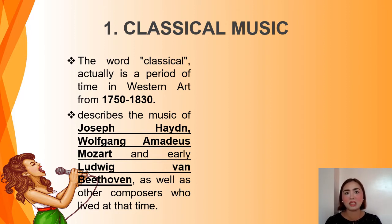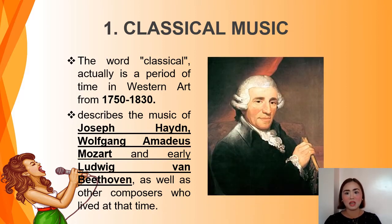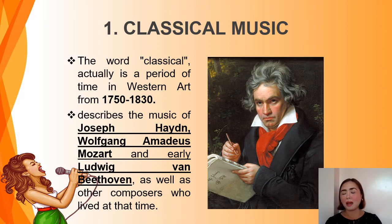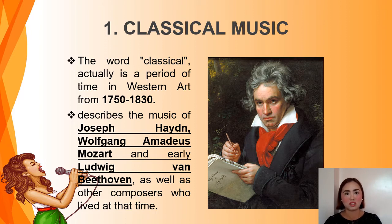All works of art created from 1750 to 1830 belong to the classical period of Western art. When it comes to music, it describes the music of Joseph Haydn, Wolfgang Amadeus Mozart, and early Ludwig van Beethoven, as well as other composers who lived at that time. Classical music is rooted in secular or religious music. A perfect example is Mozart, who is considered a child prodigy — born in Salzburg, Austria, already competent in piano and violin at five years old, and at 17 was already the chief conductor and composer of the Austrian royal family.